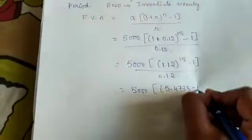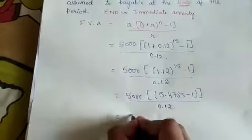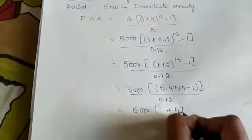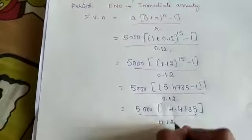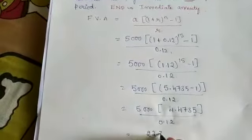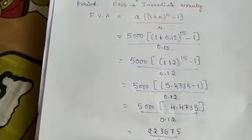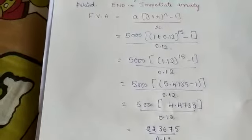You get 5.4735. Minus 1, the whole thing divided by 0.12. So 5000 into 4.4735, whole thing divided by 0.12. This gives us 22,367.5 divided by 0.12.